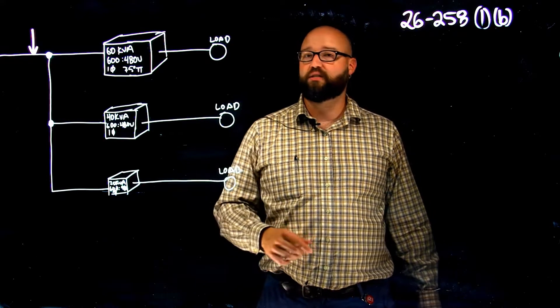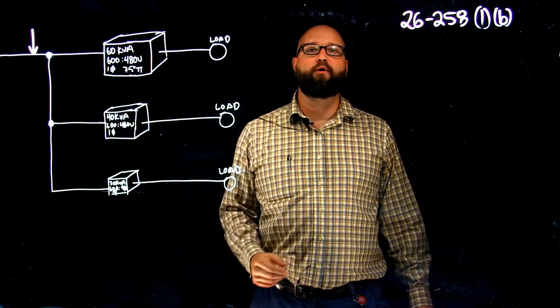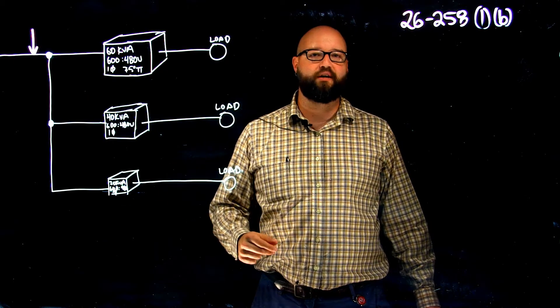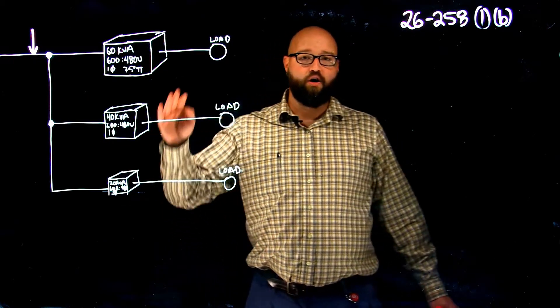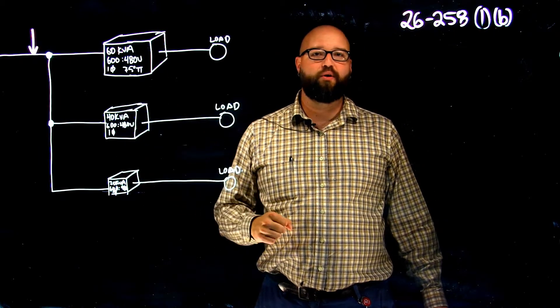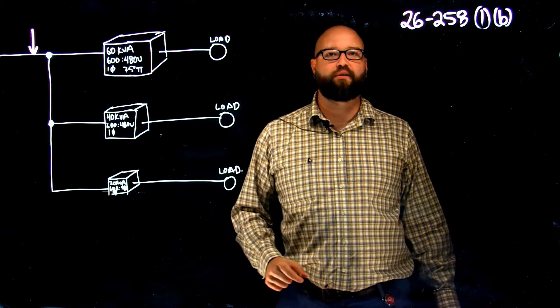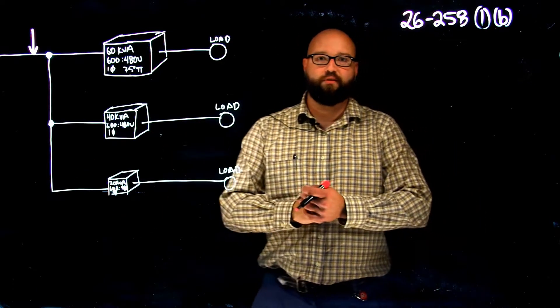If we take a look at 26-258-1B, it basically states that when we have multiple transformers fed from a single conductor, we are going to take all of our rated currents, add them together, and then take 25% of our largest rated current and throw that right on top. We're going to do it slightly differently, and we're going to achieve the same result.